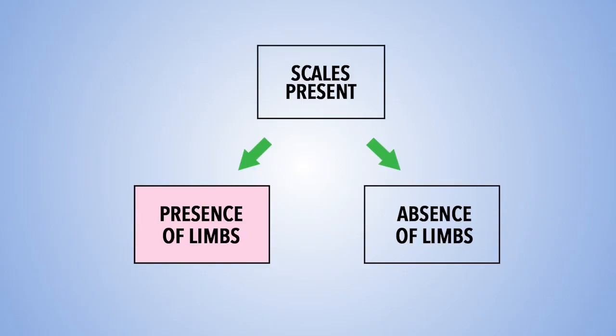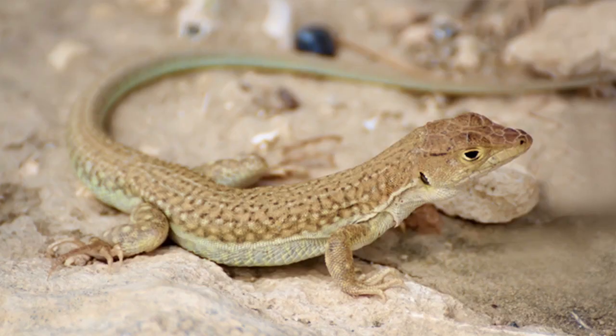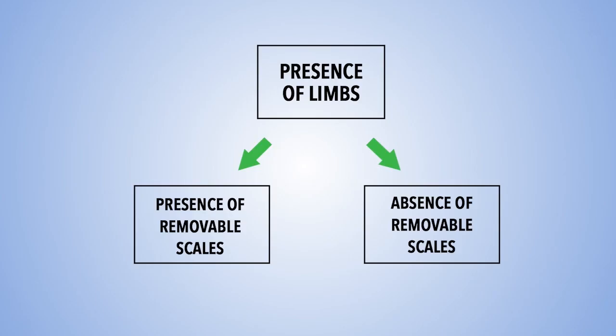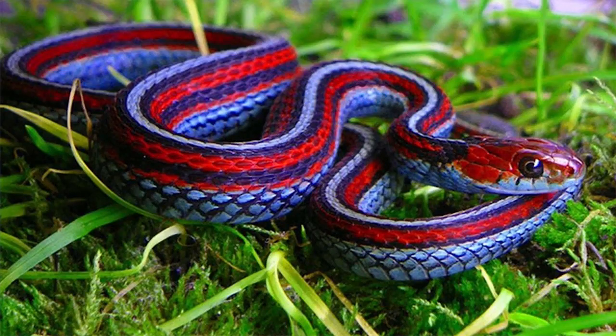Now we go back to the scales present group. Our differentiating factor is whether there are limbs or not — presence of limbs versus absence of limbs. For presence of limbs we have the fish and the lizard, whilst for absence of limbs we have the snake. For presence of limbs, we further divide using absence of removable scales versus presence of removable scales. For absence of removable scales we have the fish.